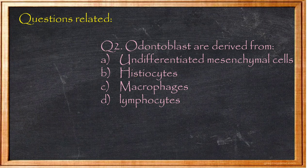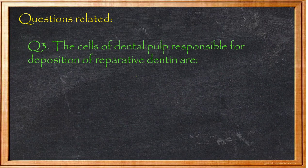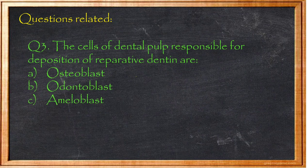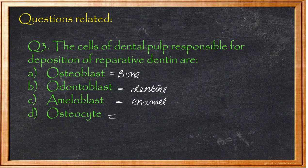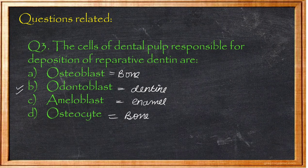Question 3: The cells of dental pulp responsible for deposition of reparative dentine are — A) osteoblast (bone-forming cells), B) odontoblast (dentine-forming cells), C) ameloblast (enamel-forming cells), D) osteocyte (bone cells). All types of dentine — reparative, secondary, sclerotic, or primary — are formed by odontoblasts. Answer: Option B, odontoblast.